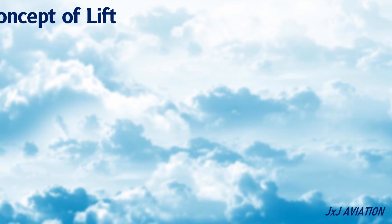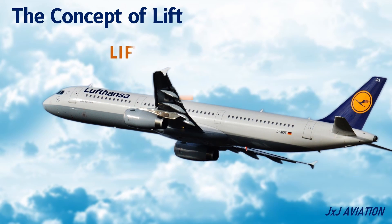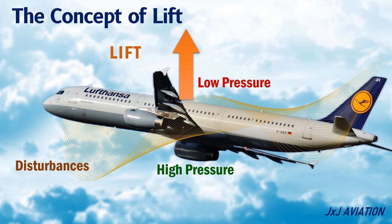The concept of lift. For lift to be generated by the wing, there should be low pressure over the top surface of the wing, and high pressure under the bottom surface of the wing. In case of any disturbances in the airflow which affect the pressure difference over the top and bottom surface of the wing, the lift is affected.